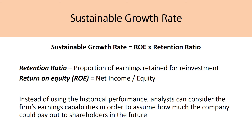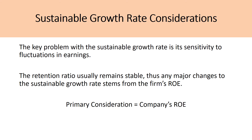Instead of using historical performance, analysts can consider the firm's earnings capability in order to assume how much the company could pay out to shareholders in the future. This breaks free from the usual trend of assuming history will repeat itself — instead, it looks at what the company can actually do in the future by projecting its earnings. The key problem with the sustainable growth rate is its sensitivity to fluctuations in earnings; while the retention ratio usually remains stable, any major changes usually originate from the company's return on equity.